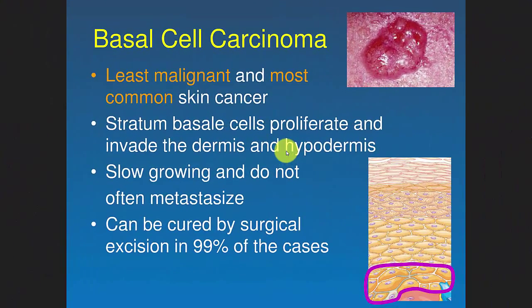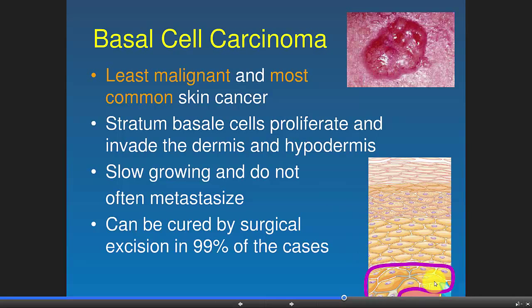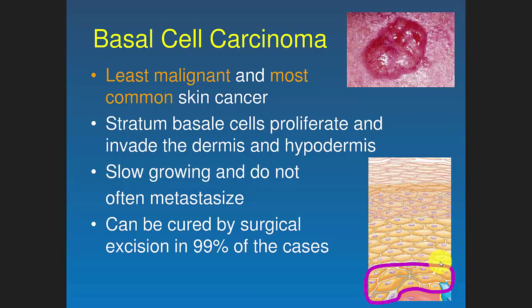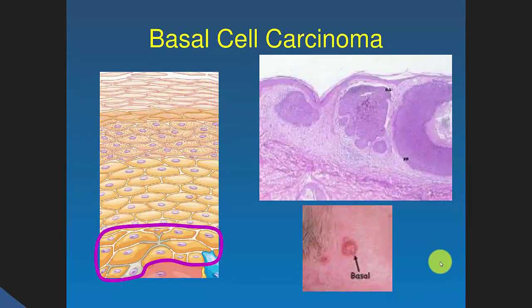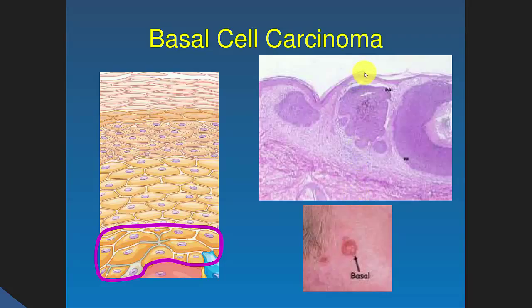Basal cell carcinoma is the least malignant but the most common. It affects the basal cells or basement membrane layer, is slow growing, doesn't really metastasize, and doesn't grow deeper into the skin — it stays superficial and can be removed surgically. When it grows, it grows outward, as opposed to melanoma, which grows deeper into the skin, making it more likely to reach blood vessels and metastasize.